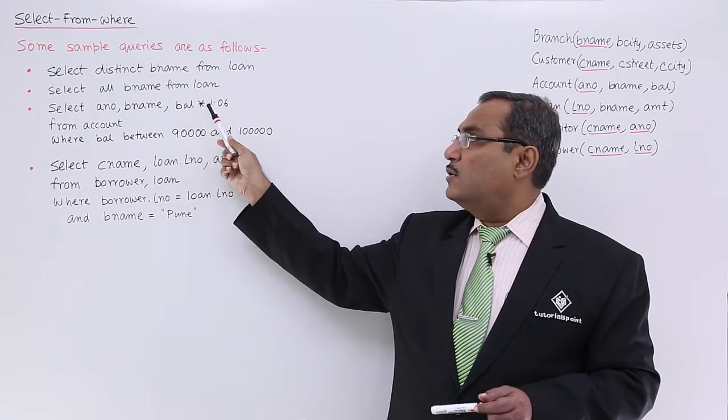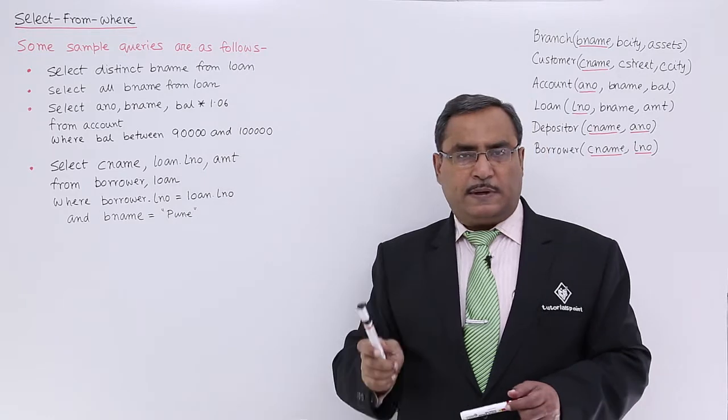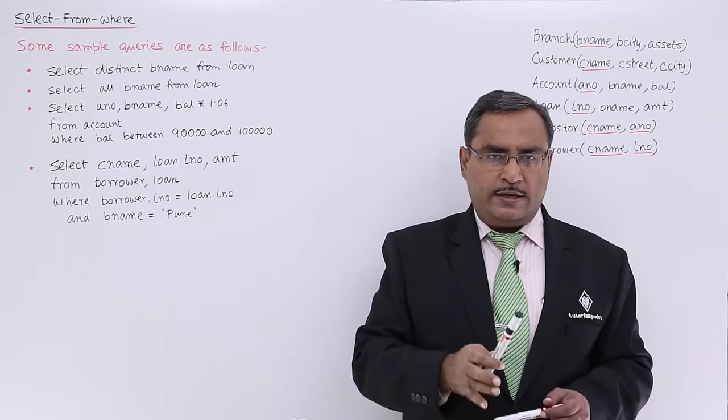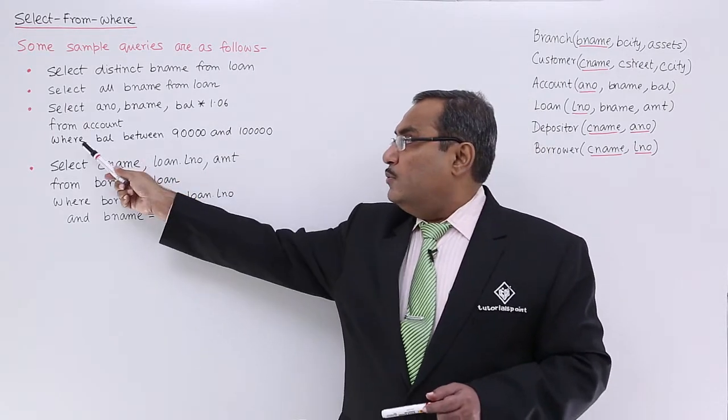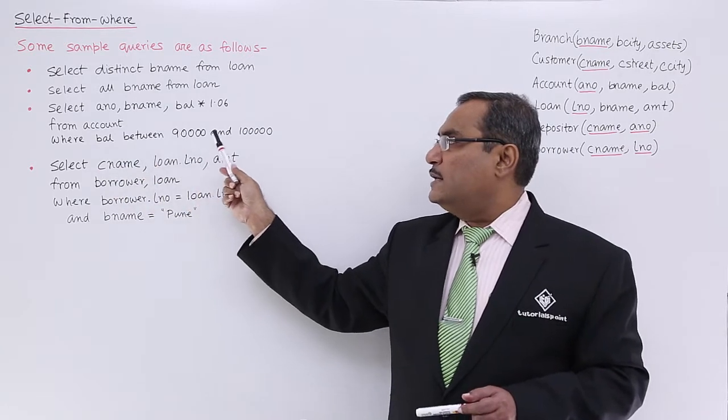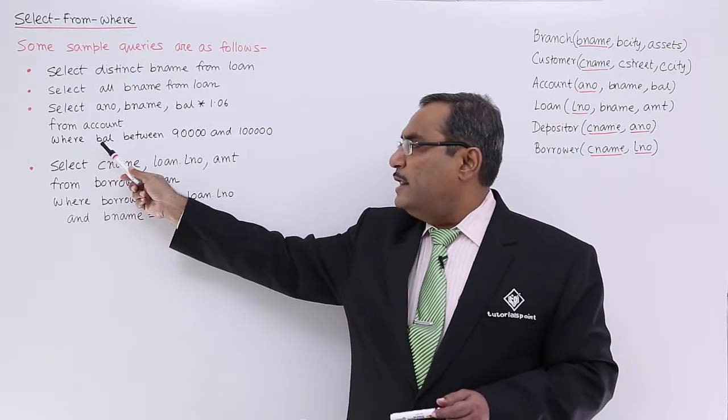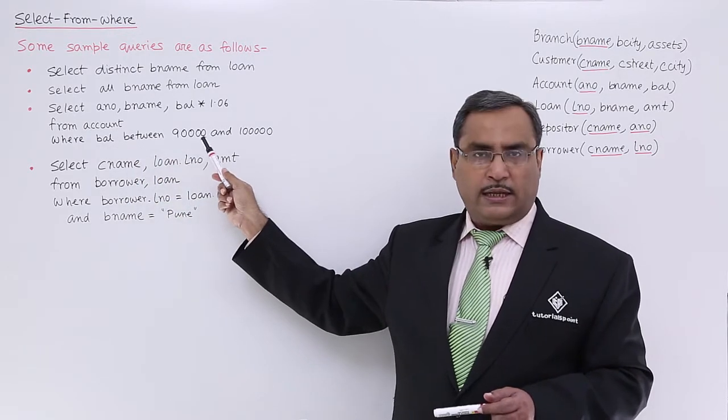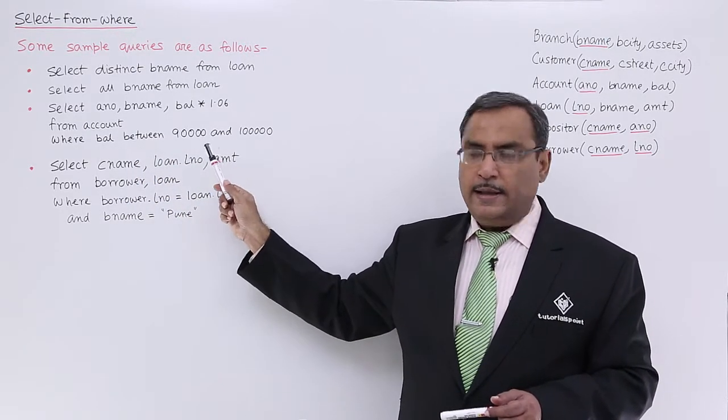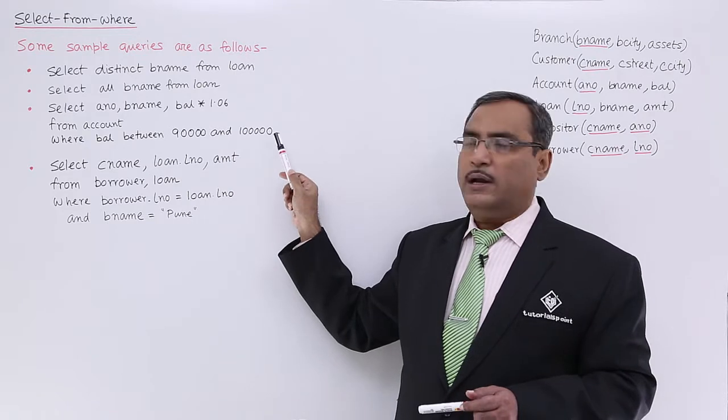Here we can go for balance star 1.06. Six percent interest is getting added with the balance. Where balance between 90,000 and 1 lakh can also be written this way: where balance greater than or equal to 90,000 and balance less than or equal to 1 lakh.